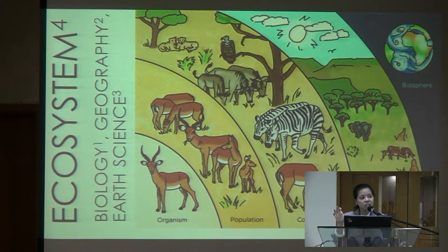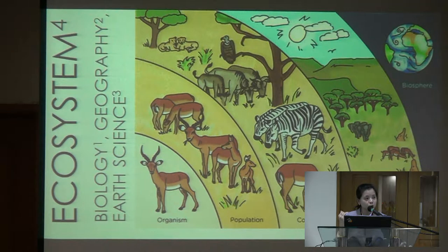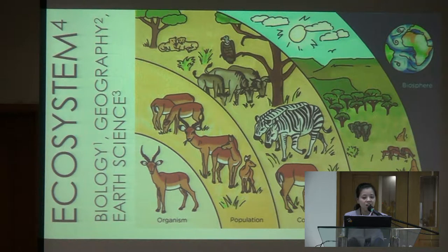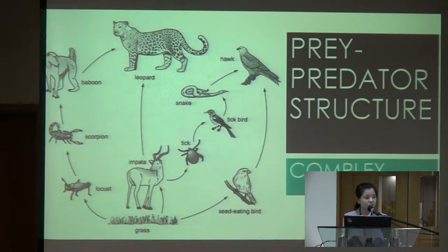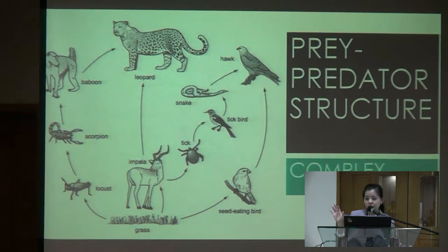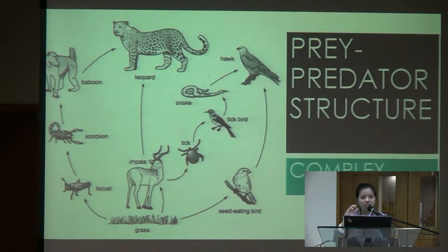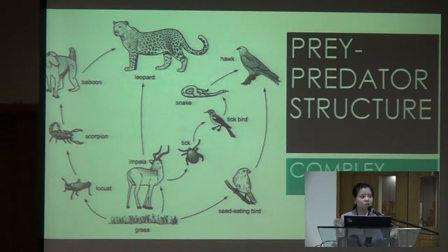Ecosystem itself is an interdisciplinary study. It includes disciplines like biology, geography, and earth science — so it is itself an interdisciplinary work. If you look at the relationships of organisms in an ecosystem, you can draw something like a graph. I associate this to graph theory: the organisms or species are the nodes, and you have directed edges. You can use graph theory to study their interactions.